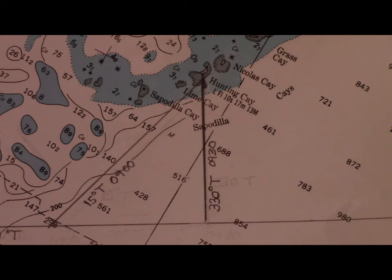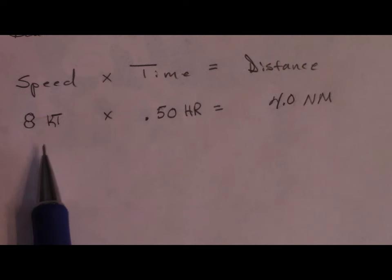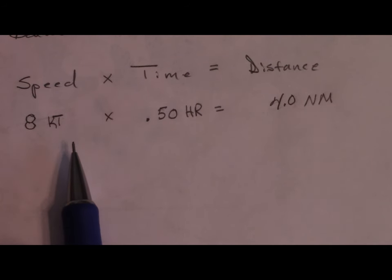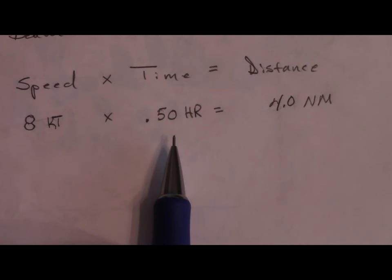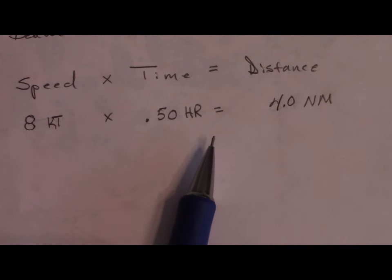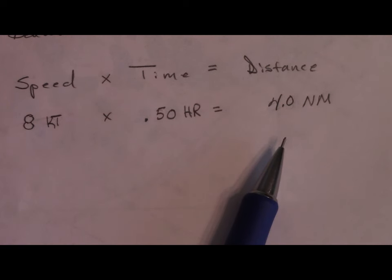I know my speed which is 8 knots and I know the time between bearings is half an hour because I took my first bearing at 0900 and my second bearing at 0930. So eight knots times half an hour means I've traveled a distance of four nautical miles, because speed times time equals distance.